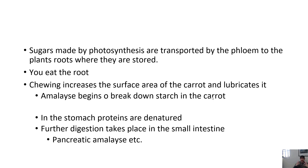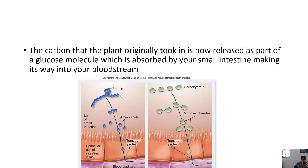You're breaking down the starch of the carrot at that time. The carrot passes through your stomach where proteins are broken down a little bit. Further digestion takes place in the small intestine when it's hit with pancreatic amylase and those other chemicals we've talked about, breaking that carrot down. The carbon that the plant originally took in through its stomata and turned into sugar is now a glucose molecule, which you've absorbed into your small intestine and is now in your bloodstream.